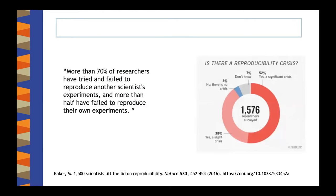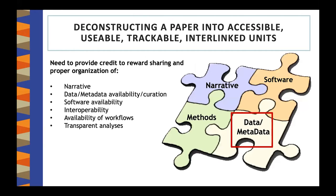Nowadays, researchers are facing reproducibility crisis issues. From a Nature paper, it shows that more than 70% of researchers have tried and failed to reproduce other scientists' experiments, and more than half have failed to reproduce their own experiments. Academic publishing is changing — we should be deconstructing a paper into accessible, usable, trackable, and interlinked units. That means we need to provide credit and reward sharing not only for narrative, but also for data, software, workflow, protocol, etc.